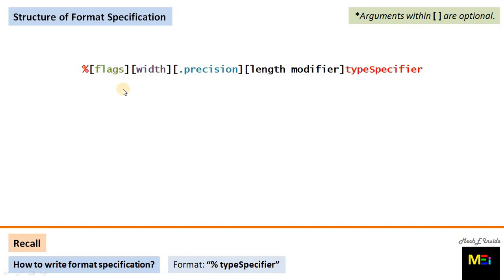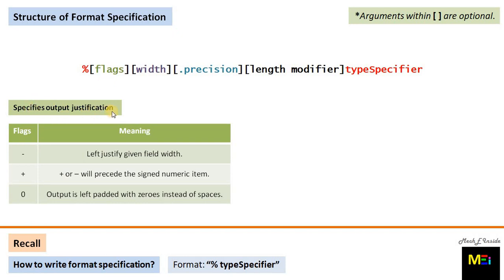Now let's understand these optional arguments. Starting with flags: a flag specifies output justification. Some commonly used flags are: minus (-), which left-justifies the given field width; plus (+), which precedes signed numeric items with a plus or minus sign; and zero (0), where the output is left-padded with zeros instead of spaces. The next optional argument is width, which specifies the minimum number of positions in the console output.